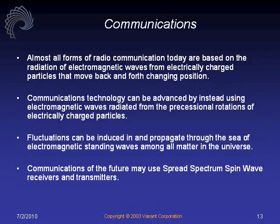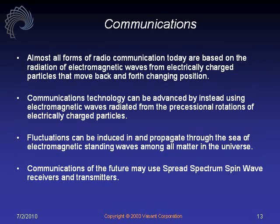Communications of the future may use spread spectrum spin wave receivers and transmitters. I'm talking about not just radiation from uncompensated spins, but spin wave ripples that spread out among the otherwise more in-harmony, more in-sync sea of standing waves. You've got three-dimensional standing waves throughout the universe already there, and then you cause a ripple among those where they temporarily shift phase and then come back into phase again. That's what a spin wave is — a temporary change in the phase of motion.